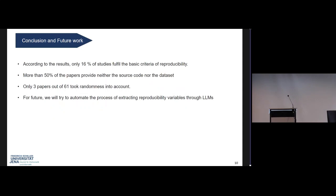Overall, the conclusion is that according to the results, only 16% of the studies fulfill the basic criteria of reproducibility — that means what the big conferences mention as reproducibility, only 16% of papers meet. More than 50% of the papers provide neither the source code nor the dataset, which is a really alarming situation for reproducibility. Only three papers out of 61 took randomness into account. For future work, we'll try to automate the process of extracting the reproducibility variables that we have done manually — it's very exhausting — and it would be much faster than doing it manually.